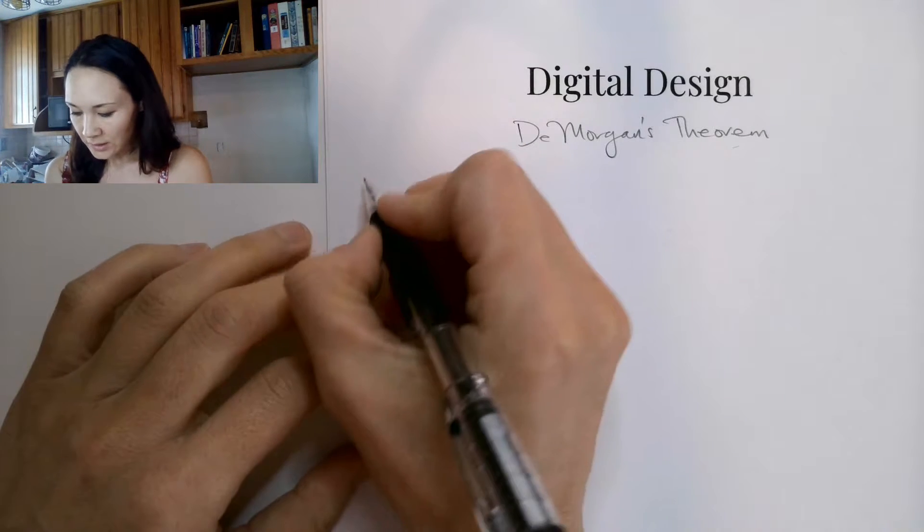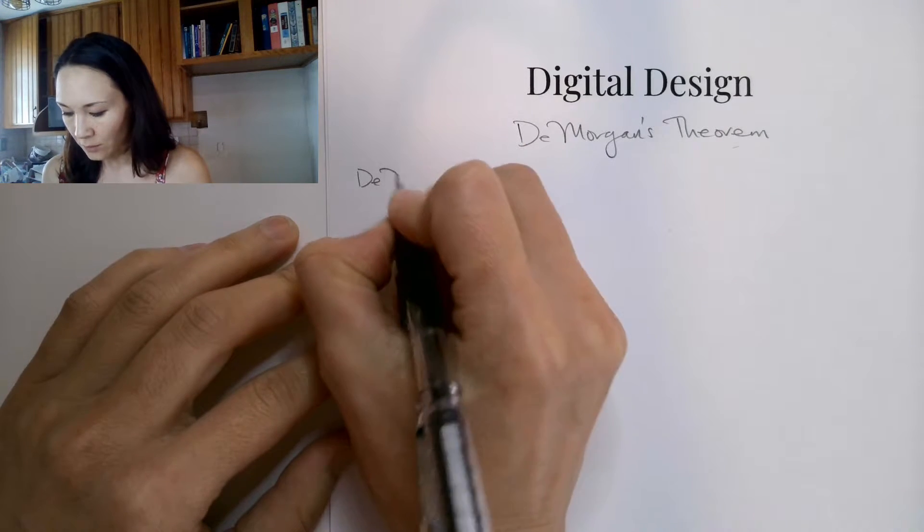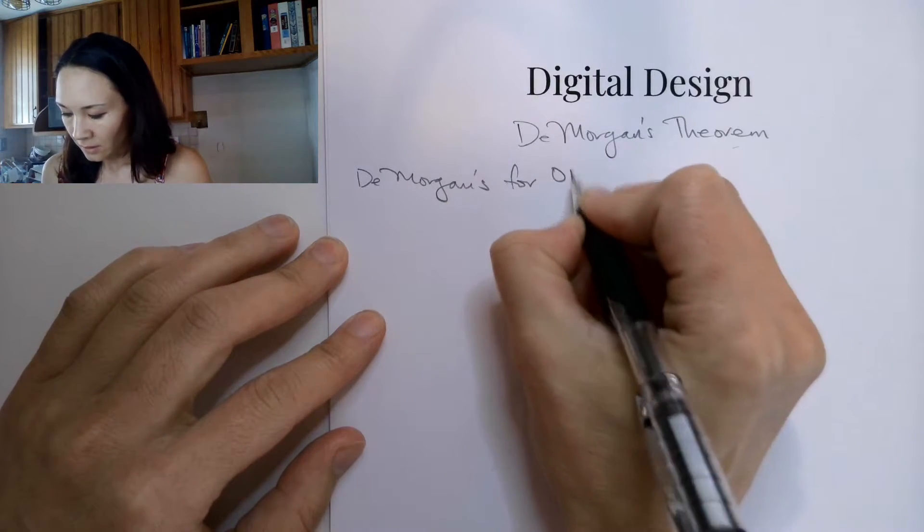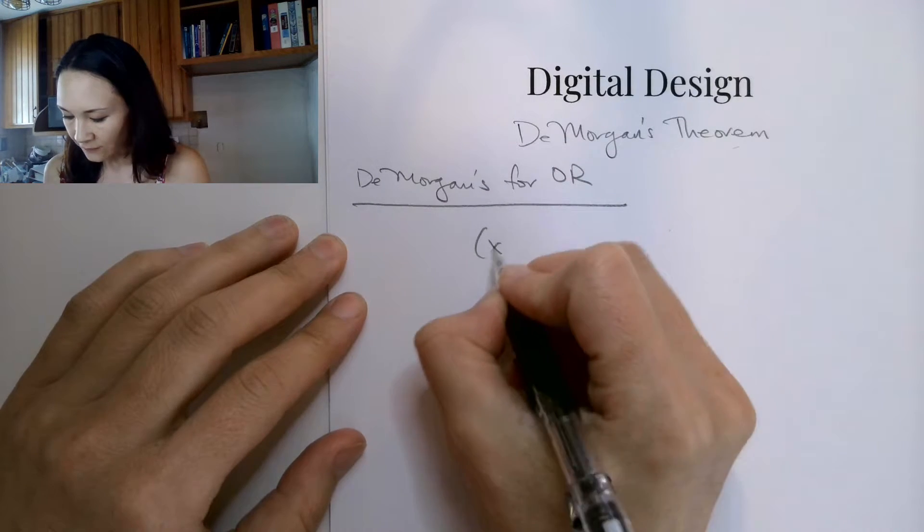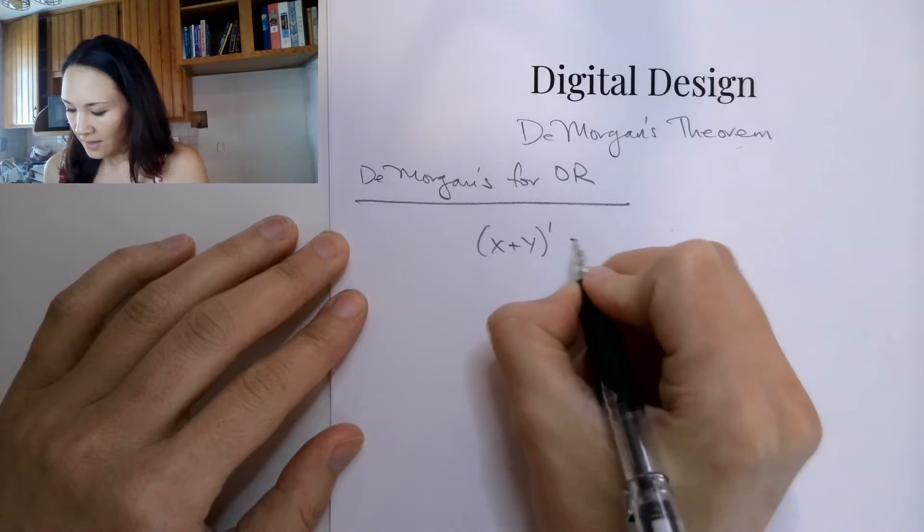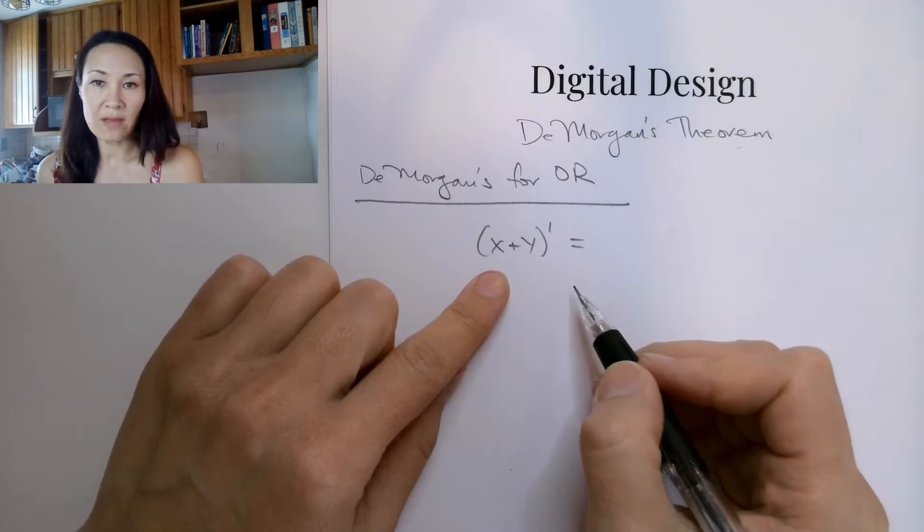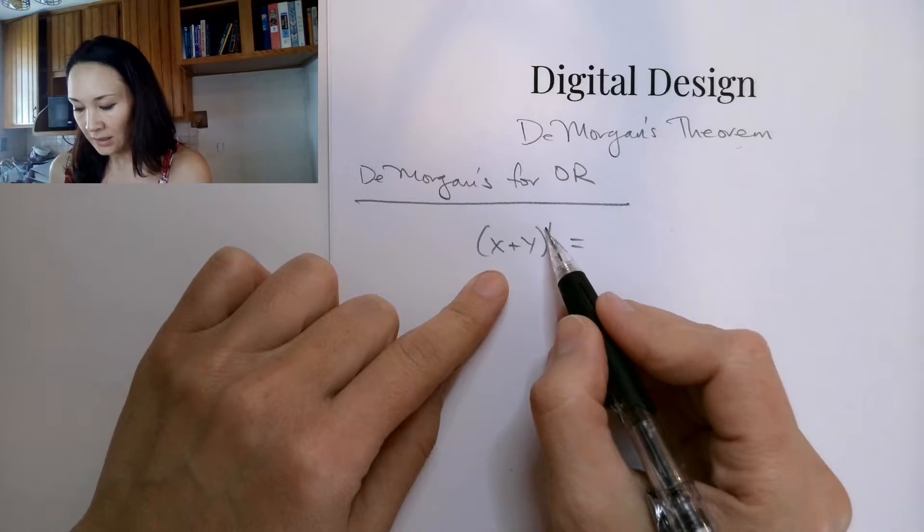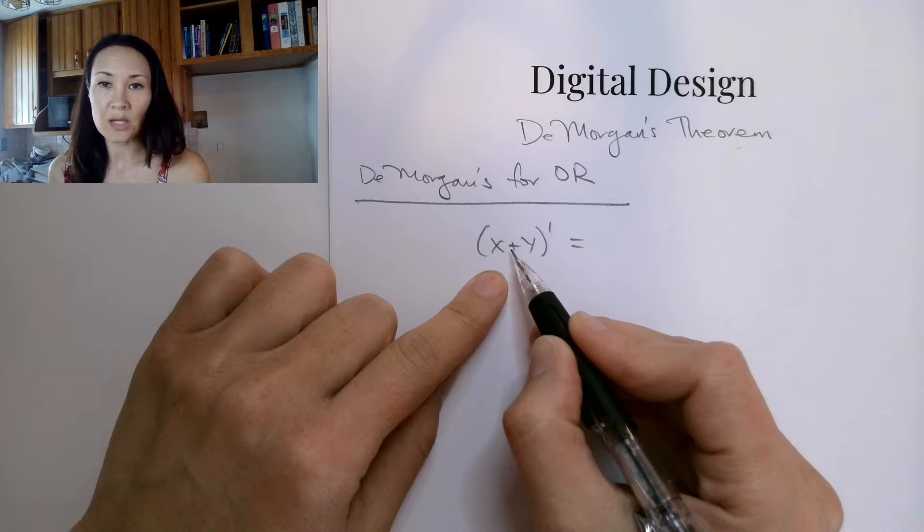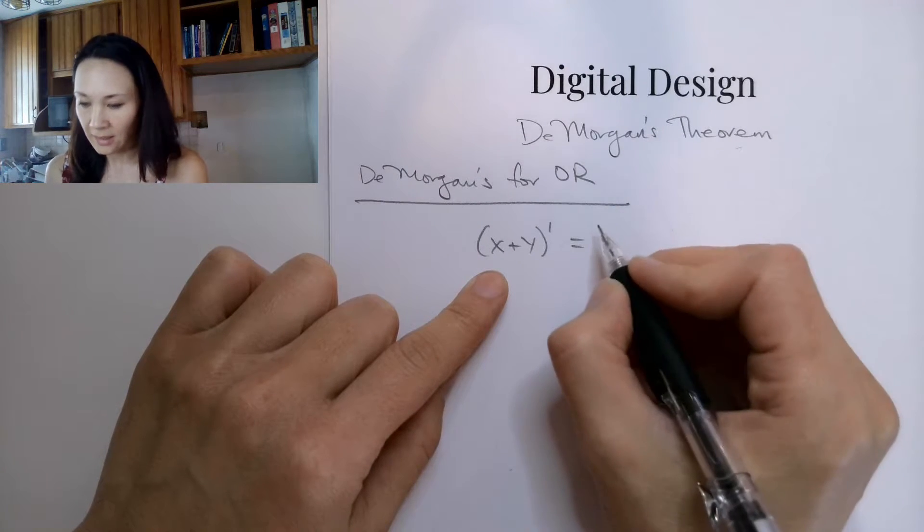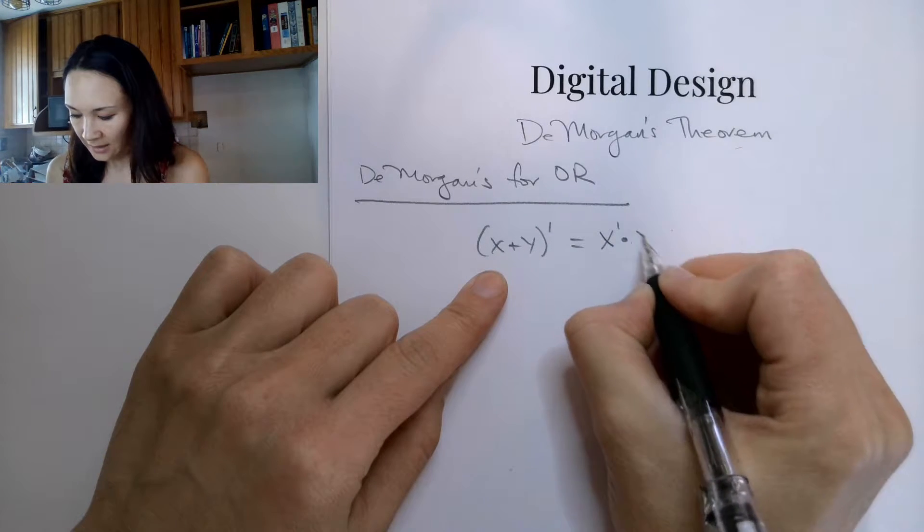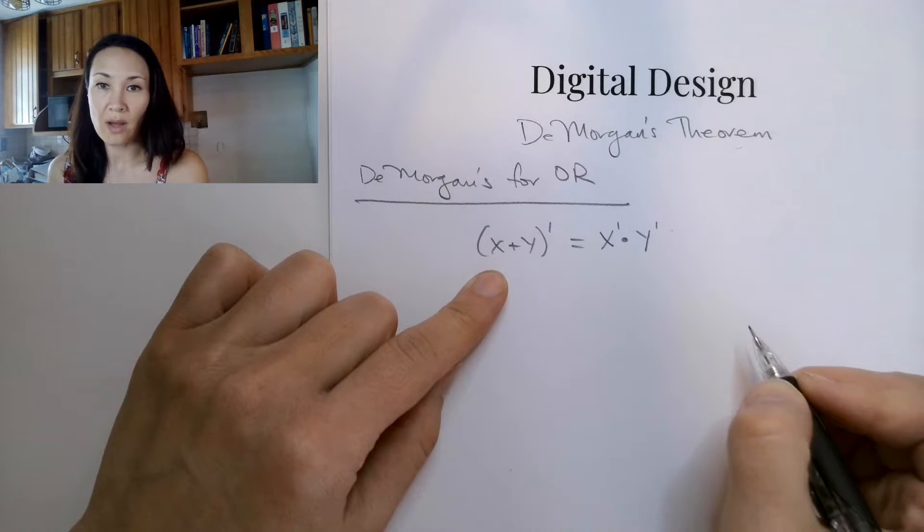So let me just recap from a previous video the definition of De Morgan's theorem for ORing. So if we have two inputs, X and Y, that get inverted, then we can simplify this or change it by basically distributing this NOT to each of these inputs and changing the OR to an AND. So it looks like this. We give the X its own NOT, we change the OR to an AND, and we give the Y its own NOT.